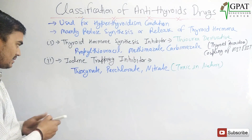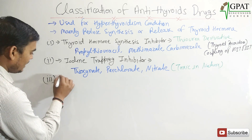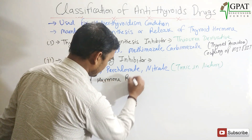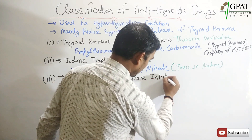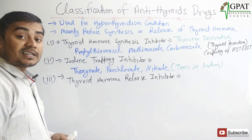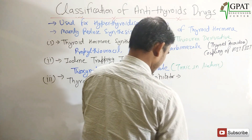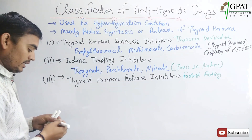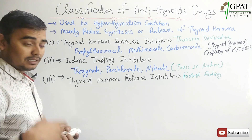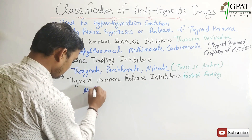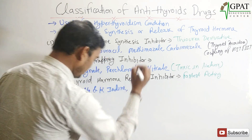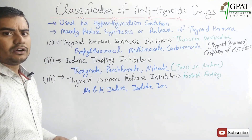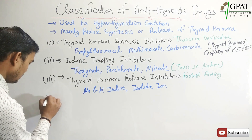The next subclass is thyroid hormone release inhibitors. These are the fastest acting antithyroid drugs. Examples of thyroid hormone release inhibitors are sodium iodide and potassium iodide.